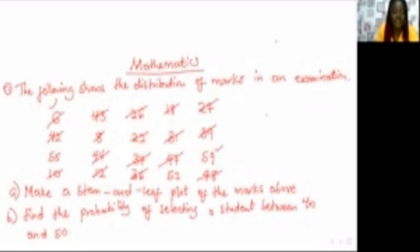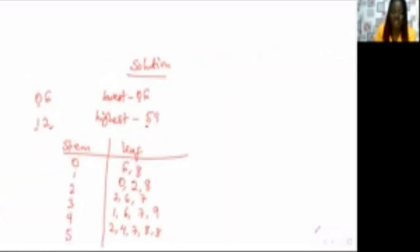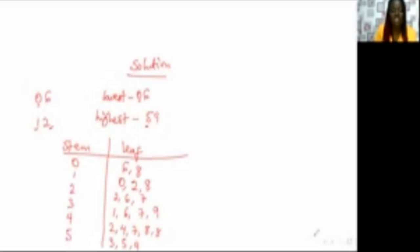For the fifth column we have 53, 55, and 59. So this is how to complete your stem and leaf plot. Now we answer the questions under it.